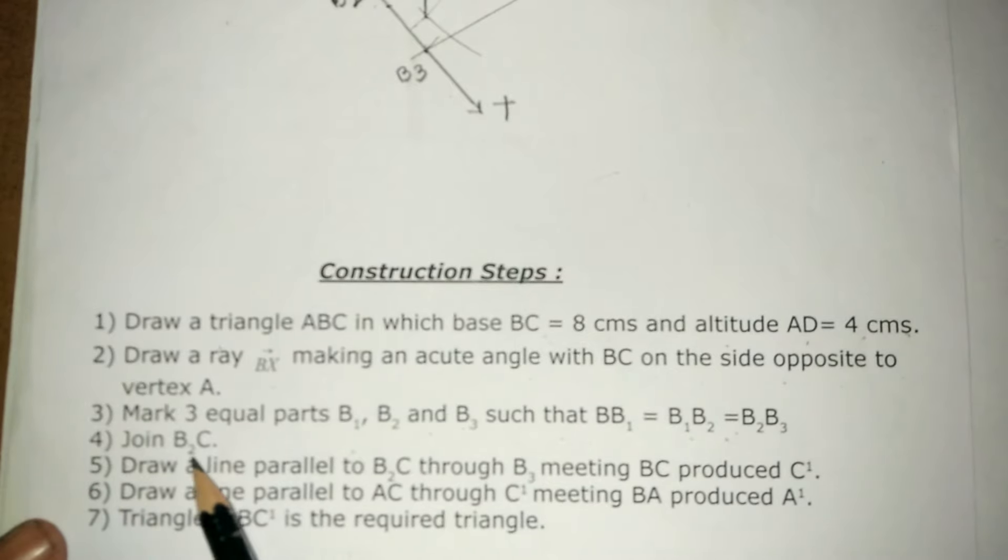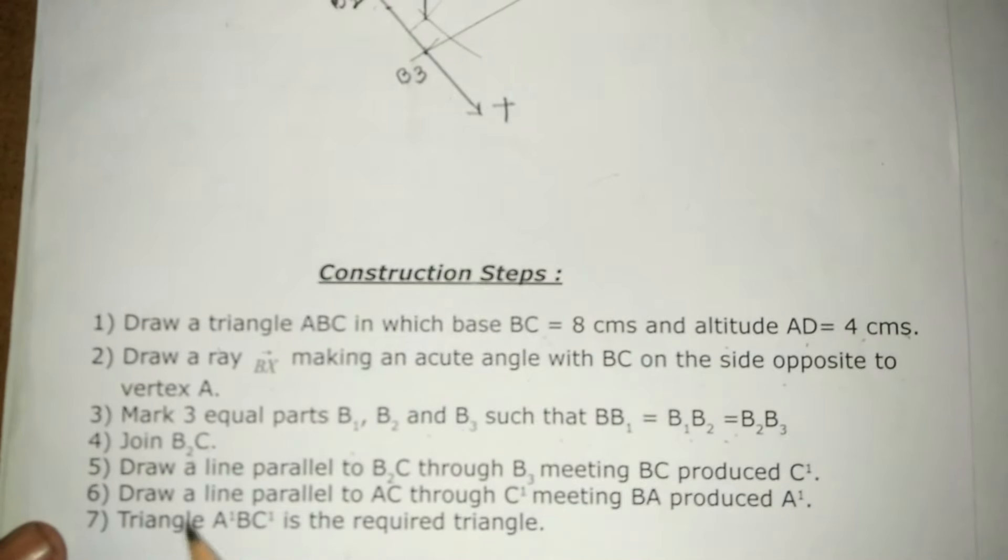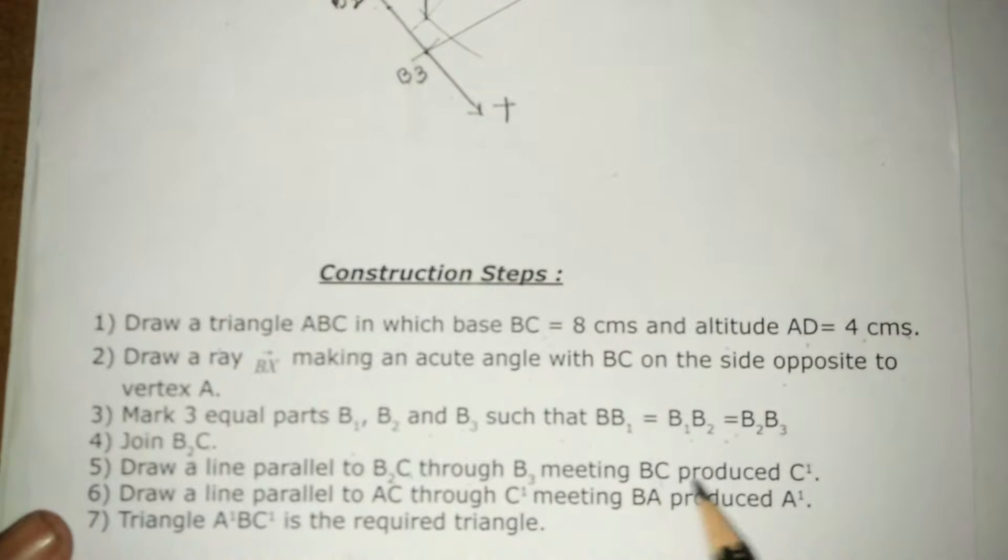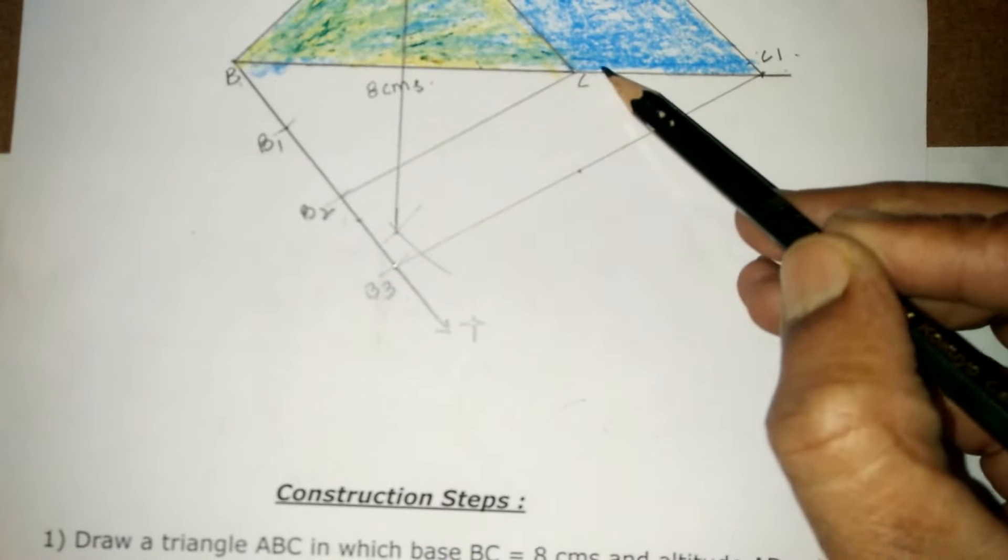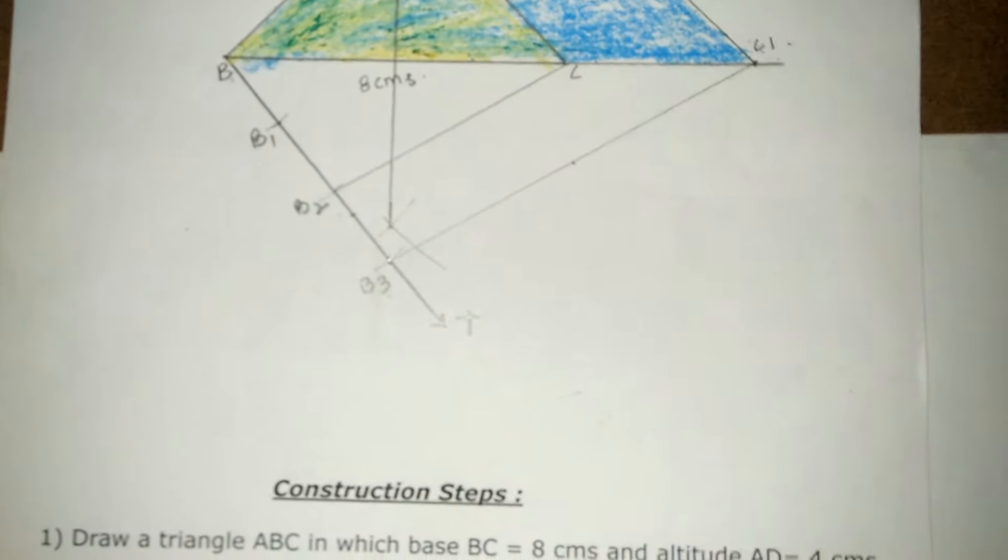Join B2C. Draw a line parallel to B2C through B3 meeting BC produced at C1. B2C is parallel to B3C1.